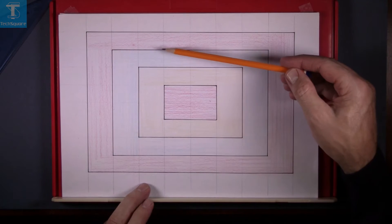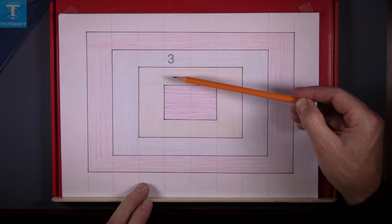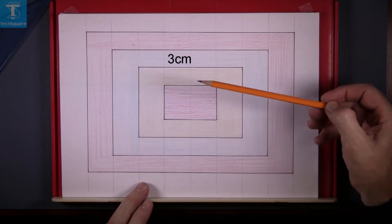It starts off with drawing in lightly a grid, this line and this line, and the space between them is three centimeters.